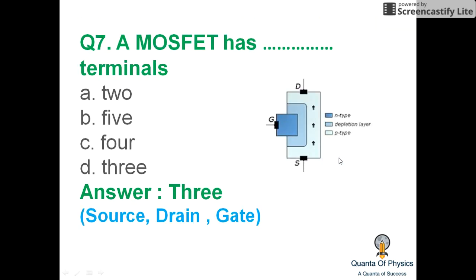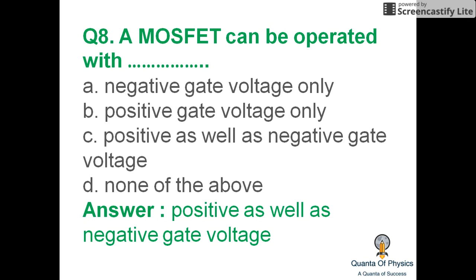Question seven: A MOSFET has three terminals — source, drain, and gate. A MOSFET can be operated with positive as well as negative gate voltage. When the gate voltage is positive it works as an E-MOSFET, and when it is negative it works as a D-MOSFET.